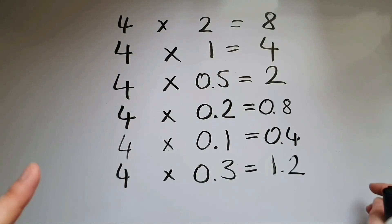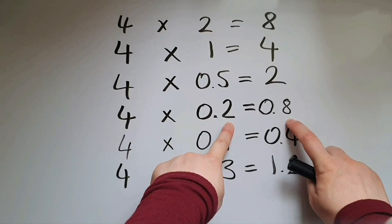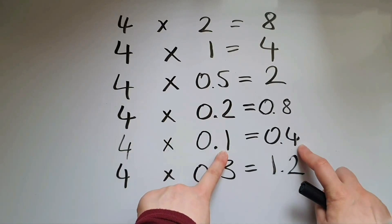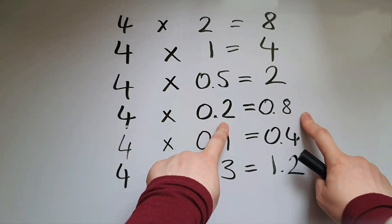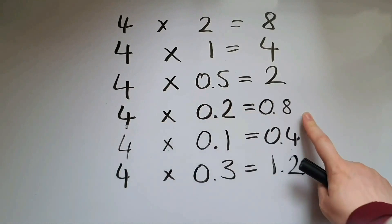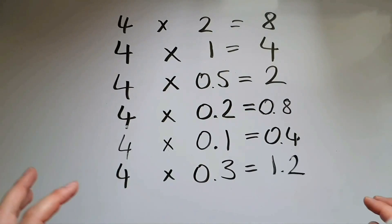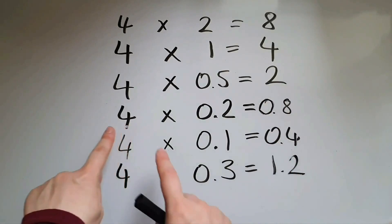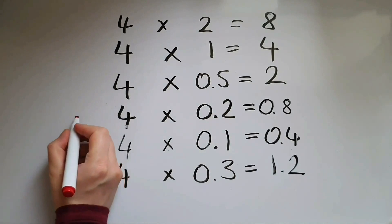So what do you also notice? Look at 4 and 2 — there we have an 8. Look at 4 and 1 is 4. So 4 times 1 is 4, 4 times 2 is 8, 4 times 5 is 20, 4 times 3 is 12. Let's just ignore the answer for the time being and just do 4 times 2. 4 times 2, we know, is 8.